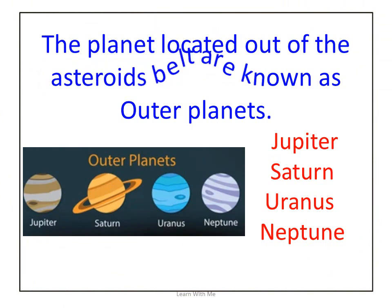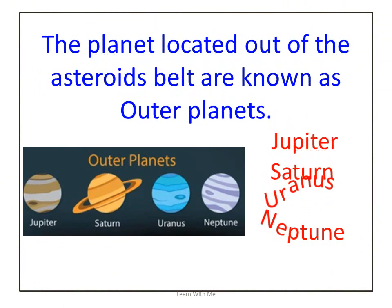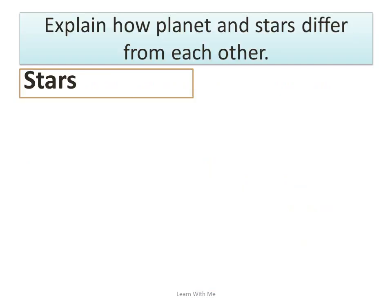What is meant by outer planets? The planets located outside of the asteroid belt are known as outer planets. The outer planets are Jupiter, Saturn, Uranus, and Neptune.